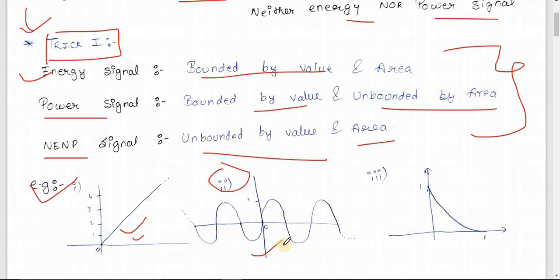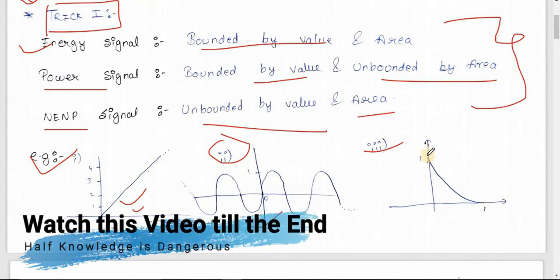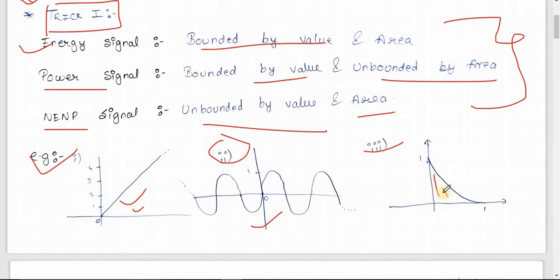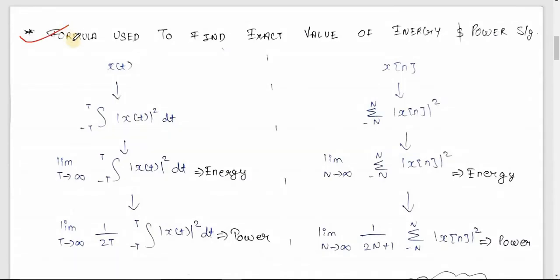In the third example, this is an exponential signal where the signal is bounded within a finite area and the amplitude is also finite. It is bounded by both value and area, so this signal is an energy signal. So to summarize: the exponential is energy, the sinusoidal is power, and the ramp is neither energy nor power.